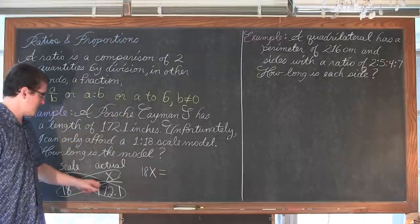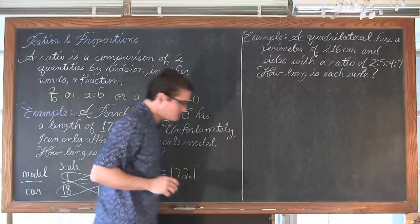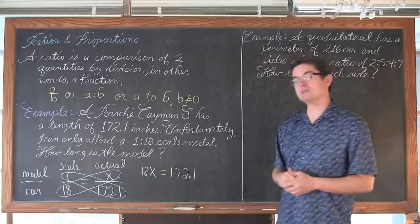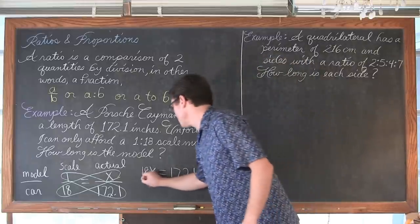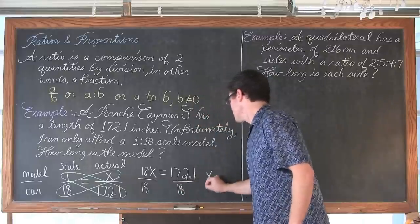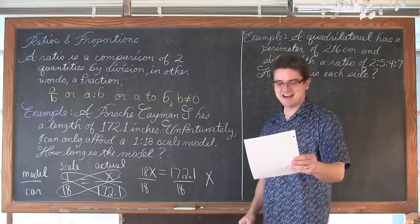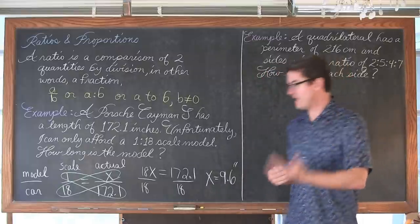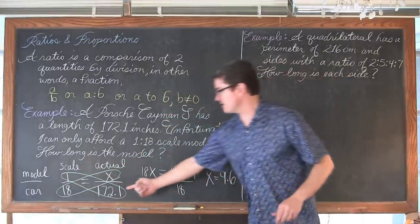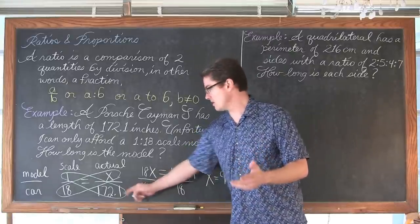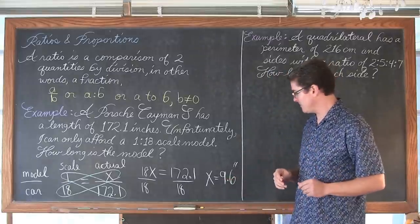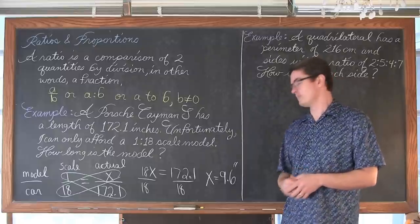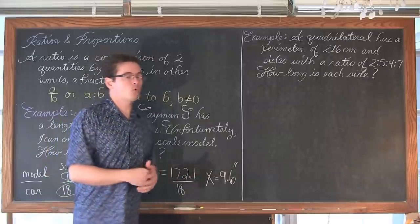We have 18 times x — as you go through the cross you are multiplying, so 18 times x. In the middle we have an equal sign, and we have to maintain that. A lot of students forget it and set up a fraction at the end, which can lead to incorrect answers. So we have 18x equals 1 times 172.1. Now we divide both sides by 18 and get approximately 9.56 inches, which we round to 9.6 inches. Based on this scale, that toy model of the car should be 9.6 inches. That model is sitting on my shelf.